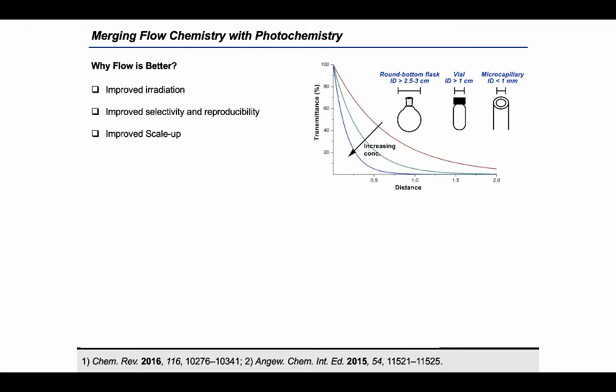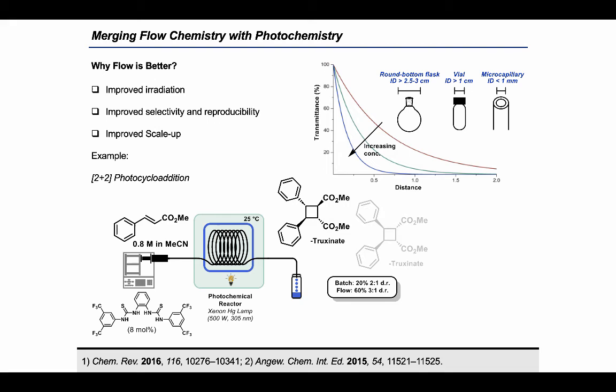A clear example of this effect is depicted in this organocatalyzed [2+2] reaction, where the continuous flow reactor design showed better performance both in terms of selectivity and yield.